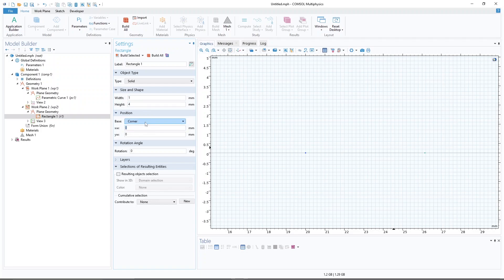So the x position should be 19.5 because this is 20. So I want to be symmetric half a millimeter before and it goes half a millimeter after that. So we created this rectangle.